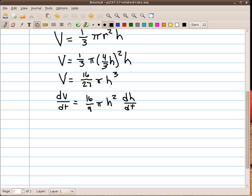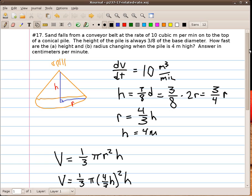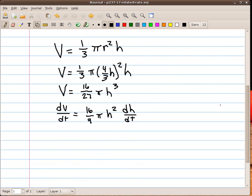Now I need to go ahead and plug in some of my numbers. My dV dt, as we mentioned above, is 10. And my h is 4. So let's go ahead and plug those numbers in. On this side, I have 10. On this side, I have 10 equals 16 ninths times pi times 4 squared, which is 16 dh over dt.